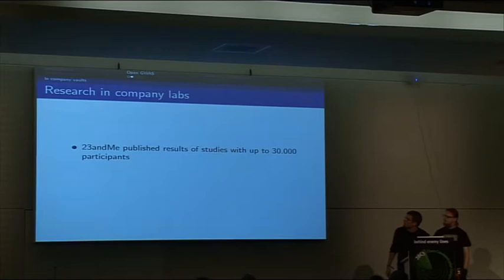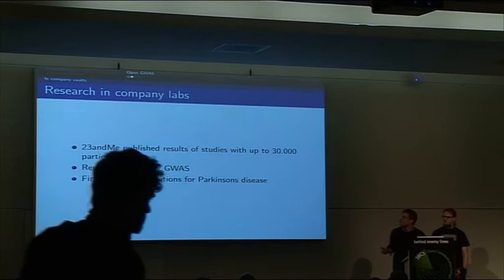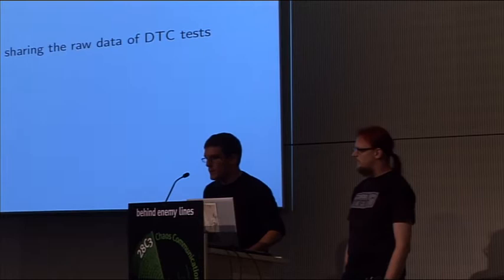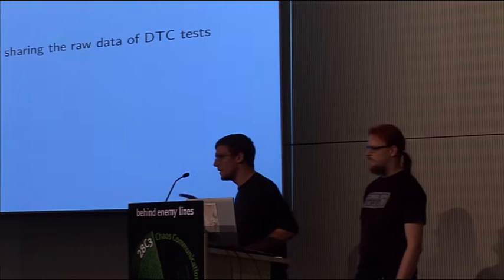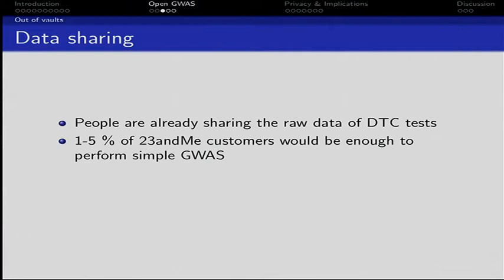There is research going on in these company labs. 23andMe published a couple of studies with up to 3,000 participants from their customers. On the one hand, they were able to replicate older studies, which showed that their approach works. On the other hand, they found a couple of new associations for Parkinson's. The problem is that people are already sharing their raw data from these DTC companies with other researchers.